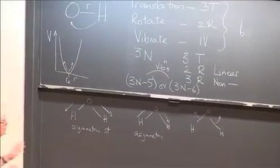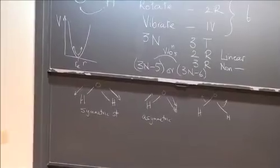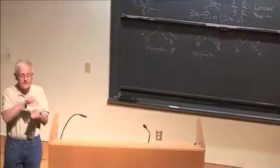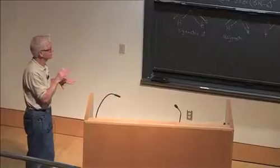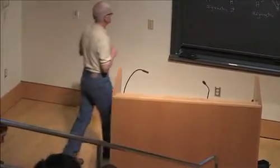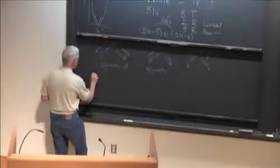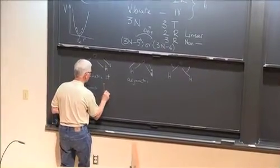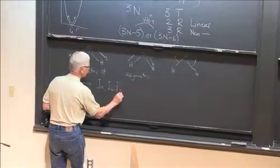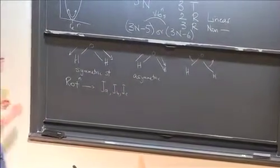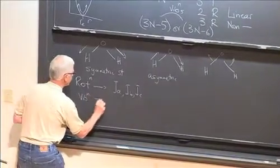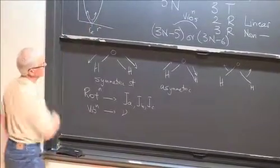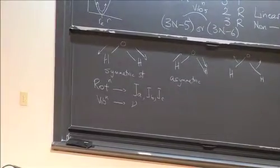There are quantized energy levels associated with each of these vibrations. In order to know how widely or closely spaced those energy levels are, we use certain parameters determined spectroscopically. For rotation, what we need to know is the moment of inertia of the molecule, or the three moments of inertia, which we can get spectroscopically. For vibration, we need to know the vibrational frequencies — this is the frequency with which the molecule vibrates.